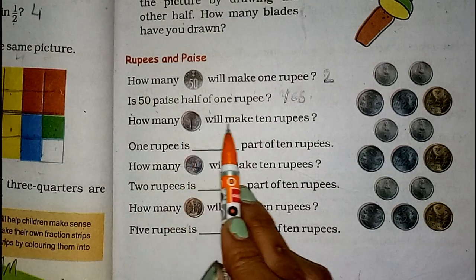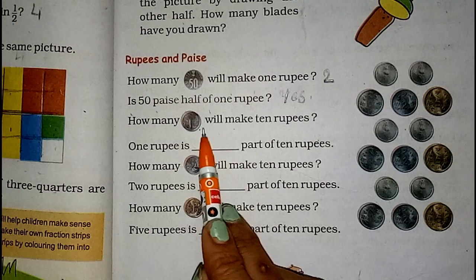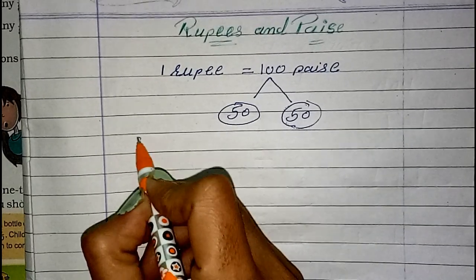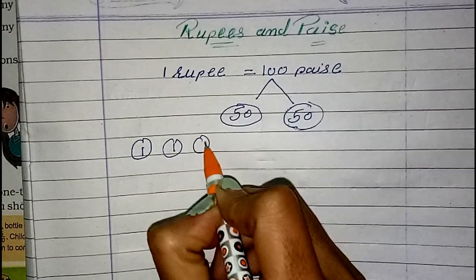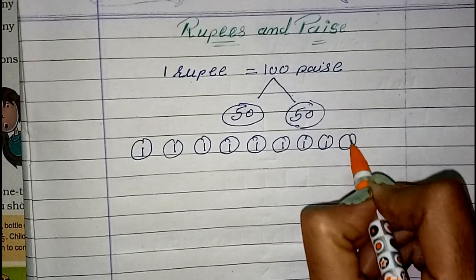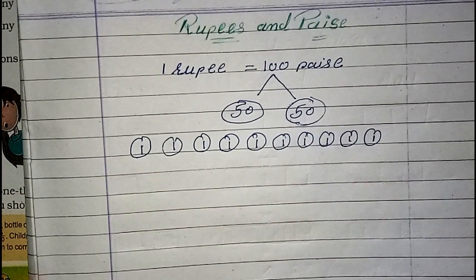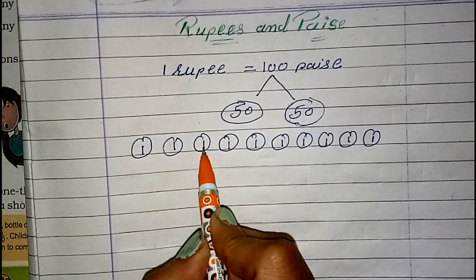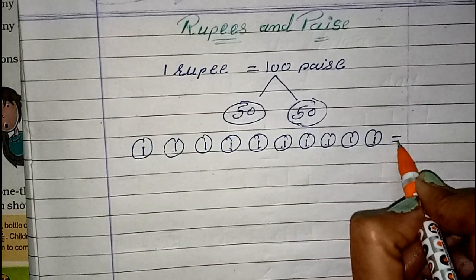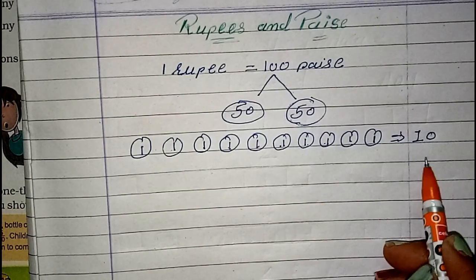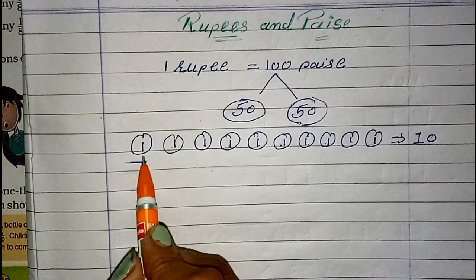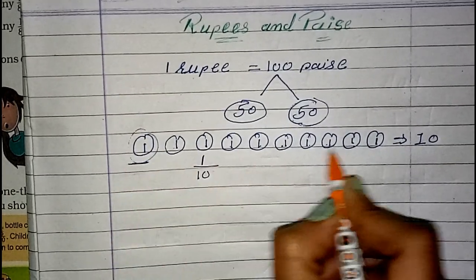How many 1-rupee coins will make 10 rupees? Let's see — we count 1, 2, 3, 4, 5, 6, 7, 8, 9, and 10 one-rupee coins. So 10 one-rupee coins make 10 rupees. So what part is 1 rupee of 10? We can say 1 rupee is the one-tenth part of 10 rupees.